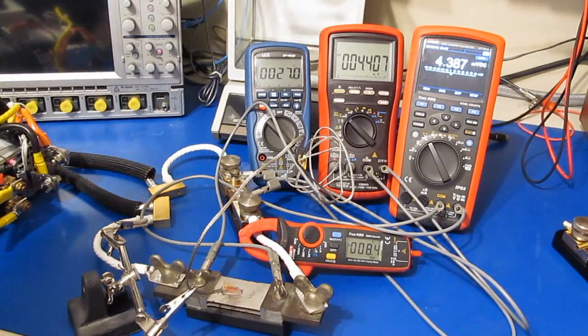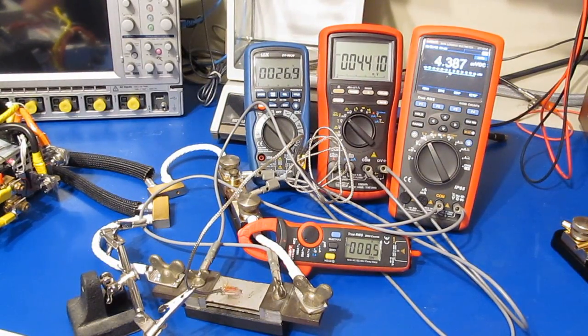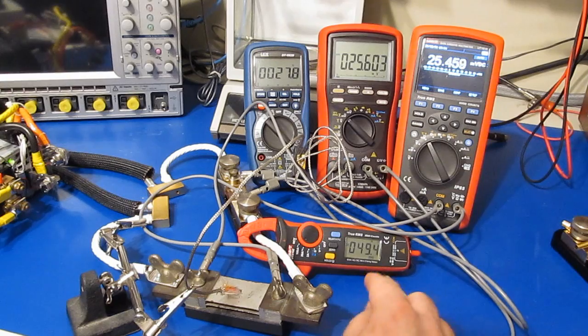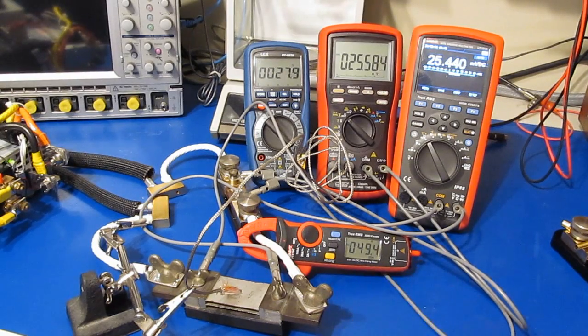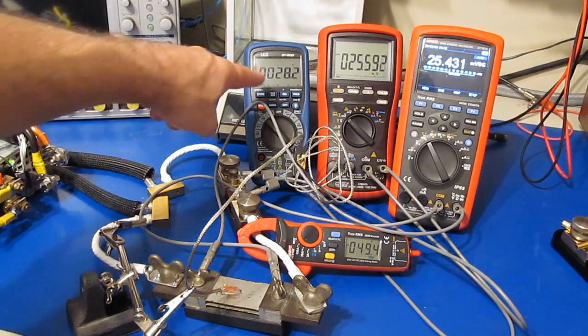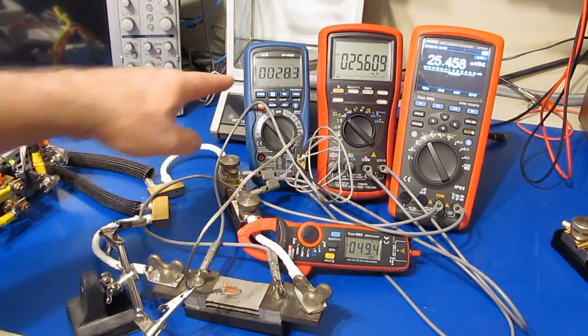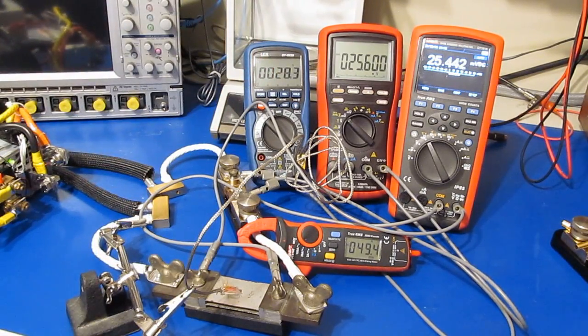All right, let's just go ahead and increase the current a little bit. This is with roughly 50 amps applied, and you can see our clamp is reading 49.4. Temperature is starting to rise a little bit on that shunt. Looks like about 28.3 degrees now.